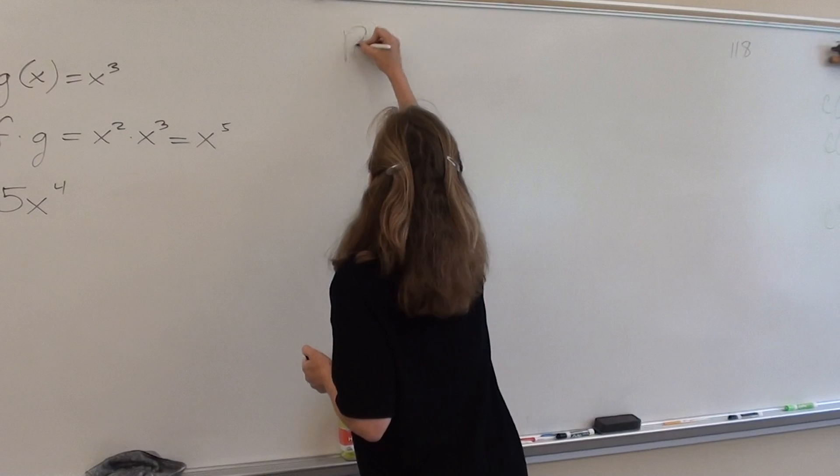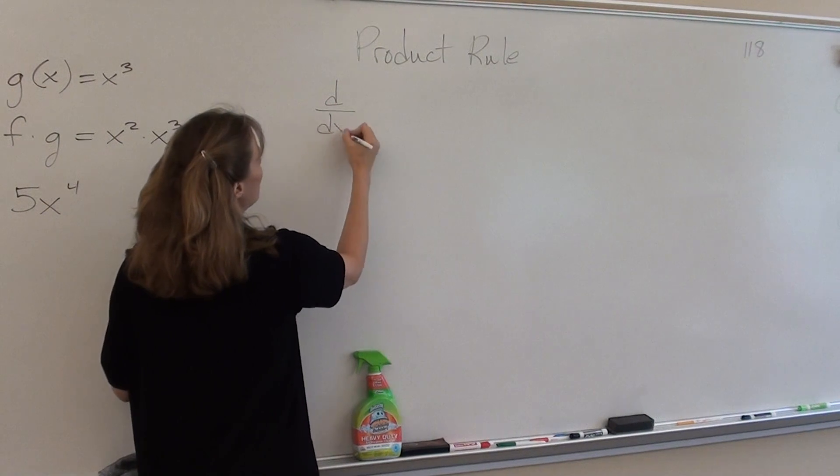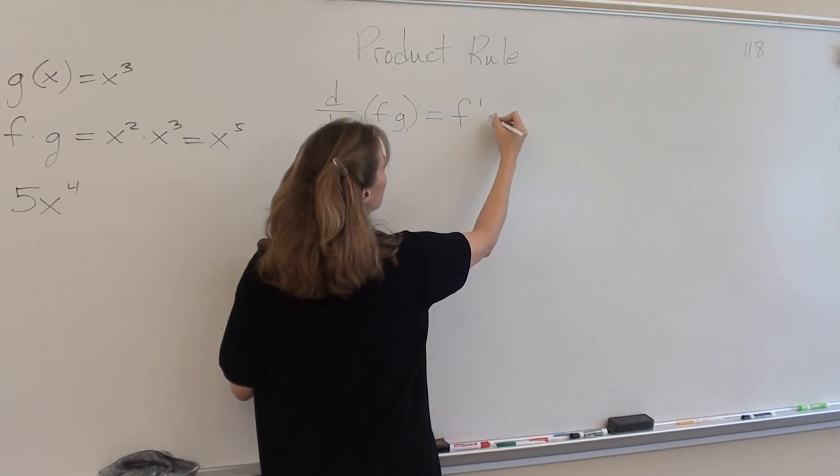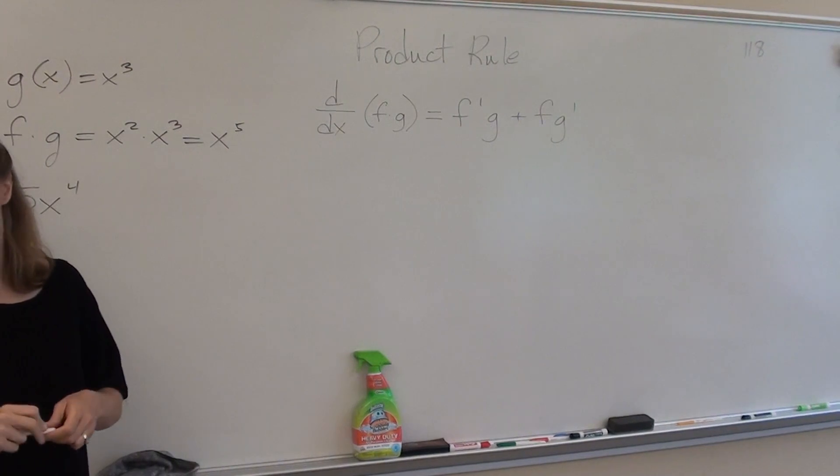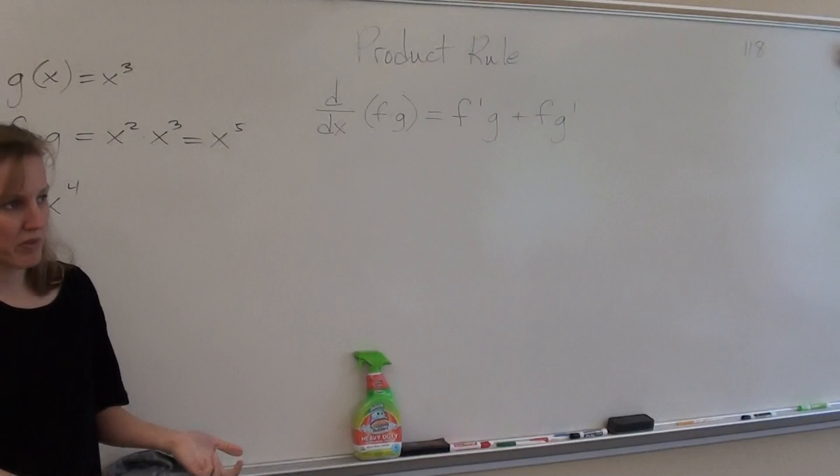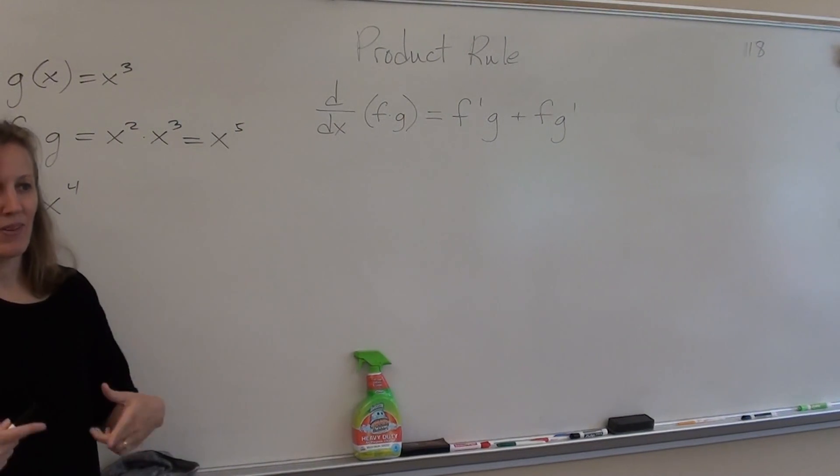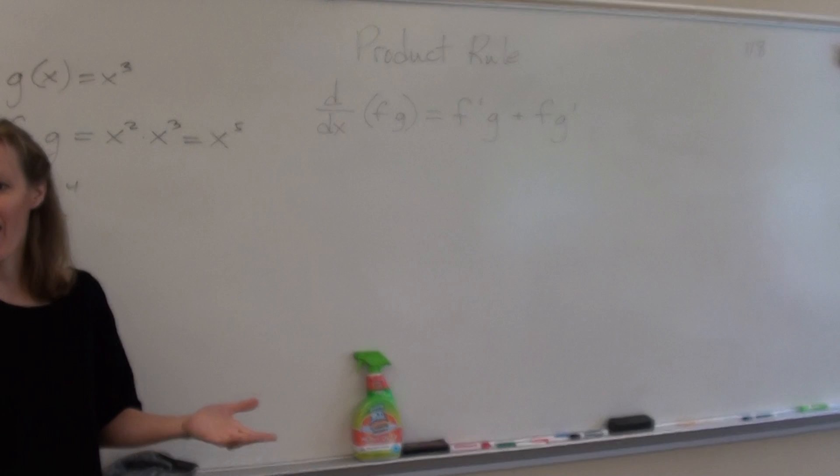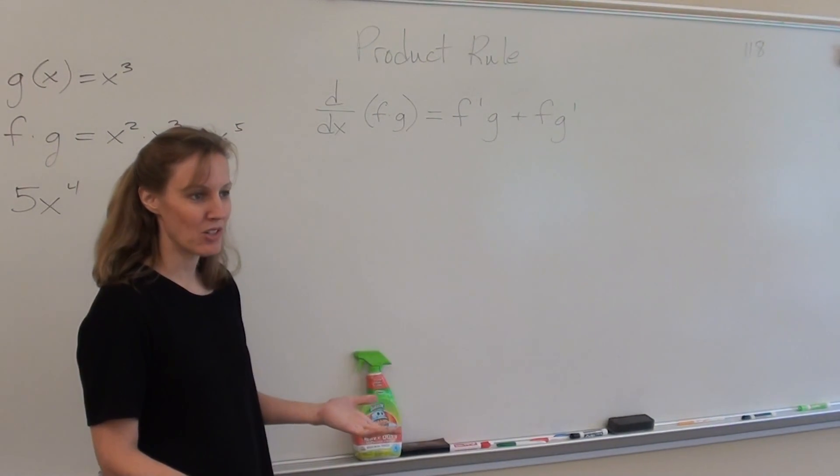Product rule says the derivative of f times g equals f' times g plus f times g'. So you do the derivative of the first function times the second plus the first times the derivative of the second. f' g plus f g'. It kind of rolls. Everybody say it with me. f' g plus f g'. Everybody. Let's try it again. f' g plus f g'. Everybody. f' g plus f g'. All right. That's the product rule. f' g plus f g'.